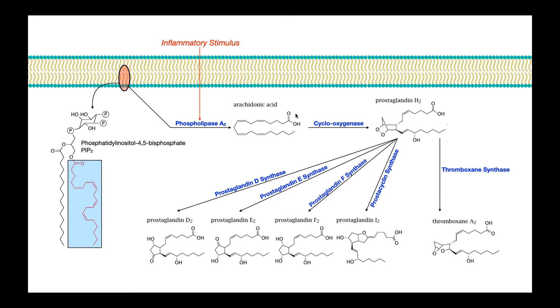And then cyclooxygenase will convert arachidonic acid into the first prostaglandin, prostaglandin H2. Now prostaglandin H2 really doesn't have much activity by itself as a prostaglandin. It really serves as a chemical precursor to these other molecules over here.